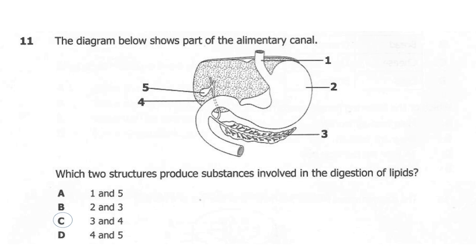The correct answer here is C: 3 and 4. The liver (4) produces bile salts, which are then stored in the gallbladder (5) — so 5 is just storing the bile salts, not producing them. The pancreas (3) produces pancreatic juice, which contains the enzyme pancreatic lipase, which breaks down fats into glycerol and fatty acids. The bile salts produced by the liver emulsify large fat droplets into smaller droplets.